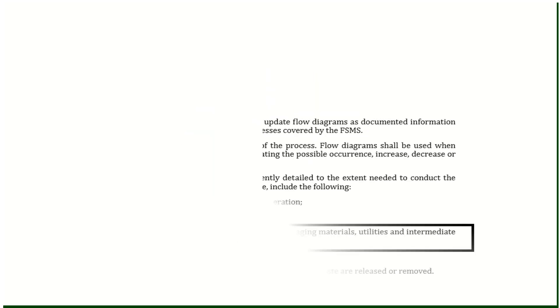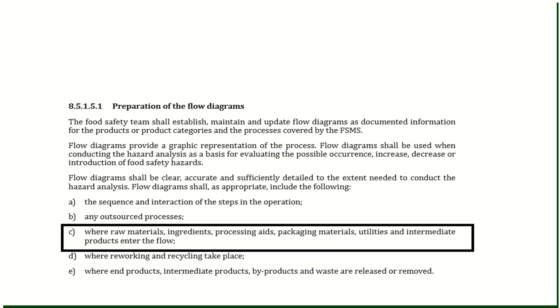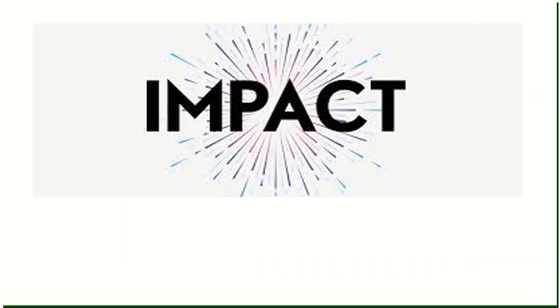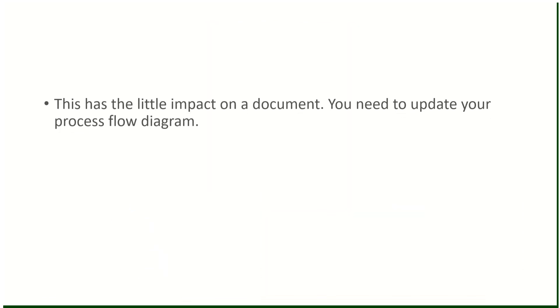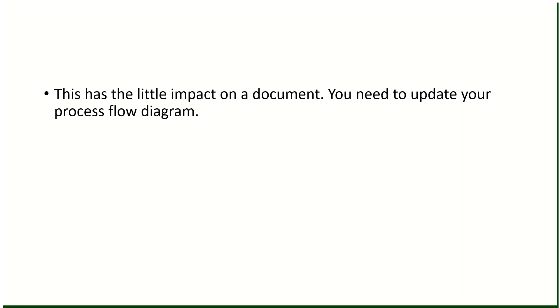Change number six: processing aids, packaging, and utilities must also be added to the required documented flow diagram. Previously, only raw materials, ingredients, and product flow were required. Now you need to show the entry of processing aids, packaging, and utilities in your process flow diagram. Impact: this has little impact on documentation — you need to update your process flow diagram.